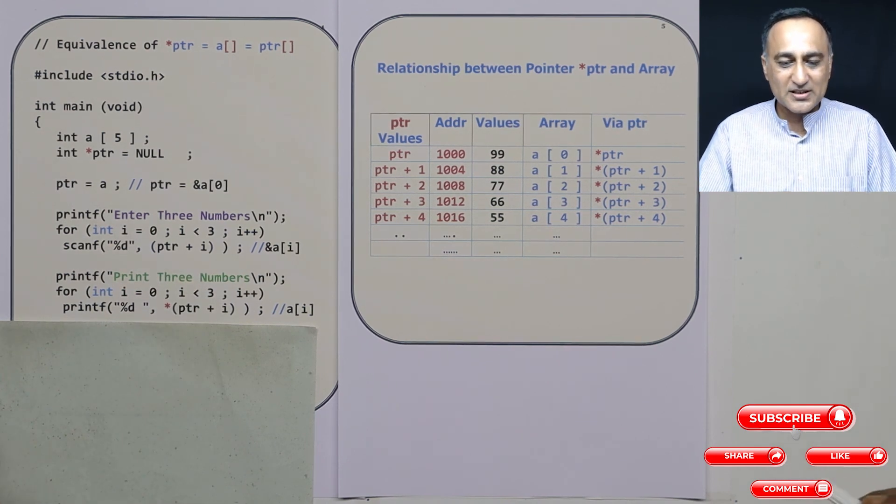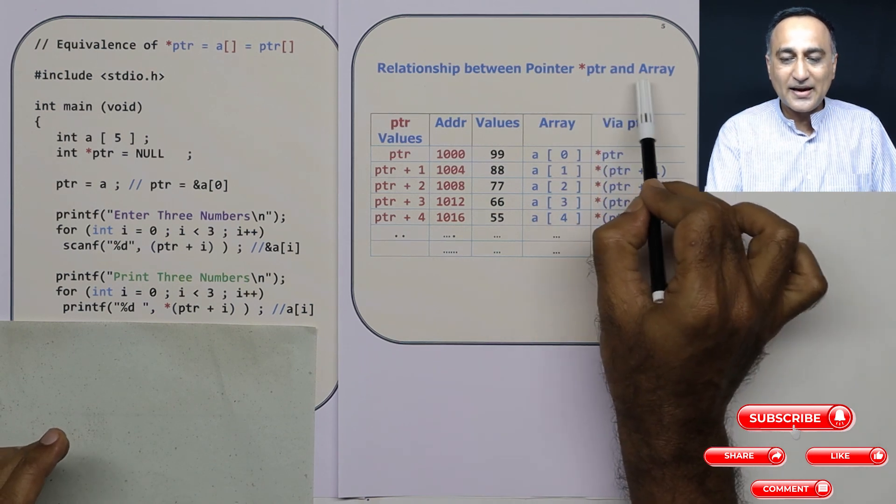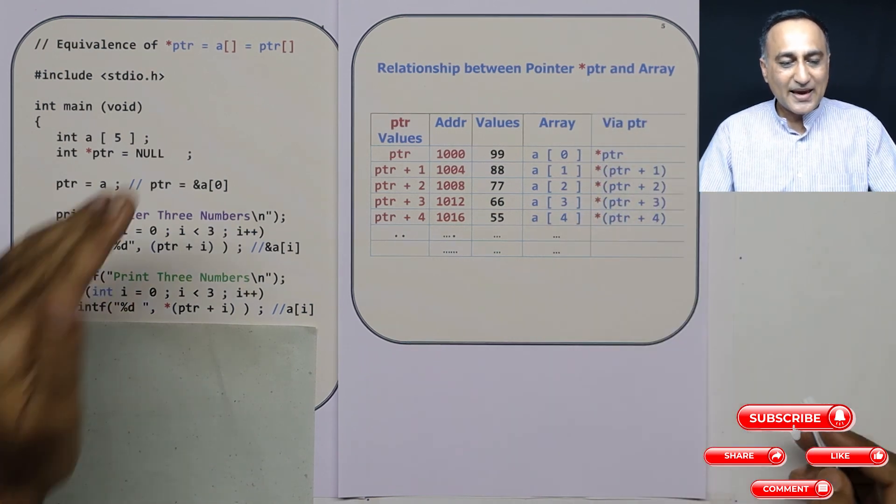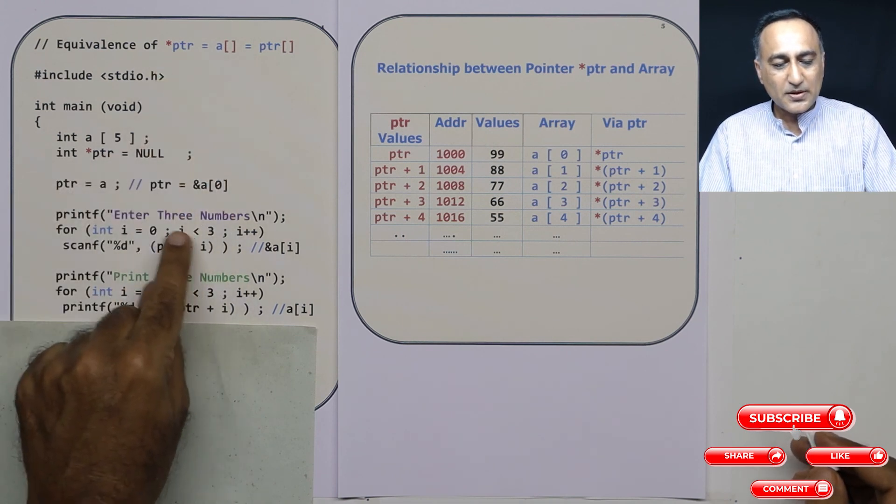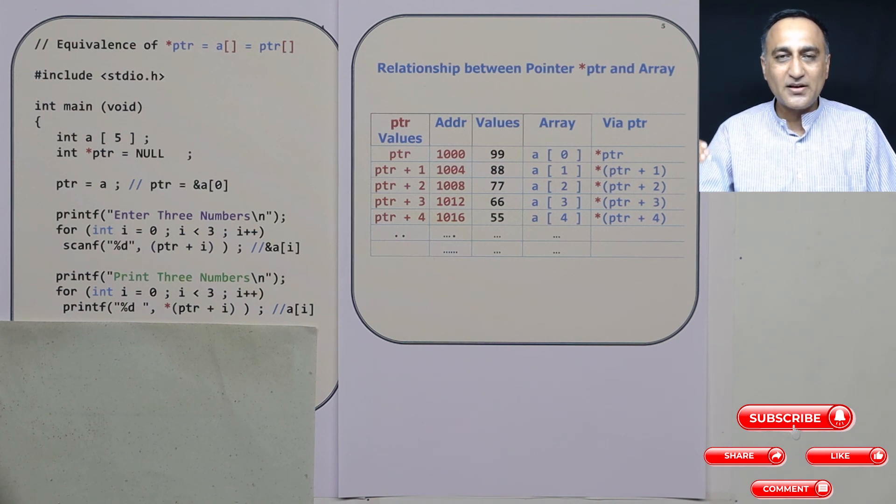So I hope you are really able to understand the close relationship between pointer to an array and an array, because arrays internally ultimately use this particular arithmetic to refer to different elements of the array.